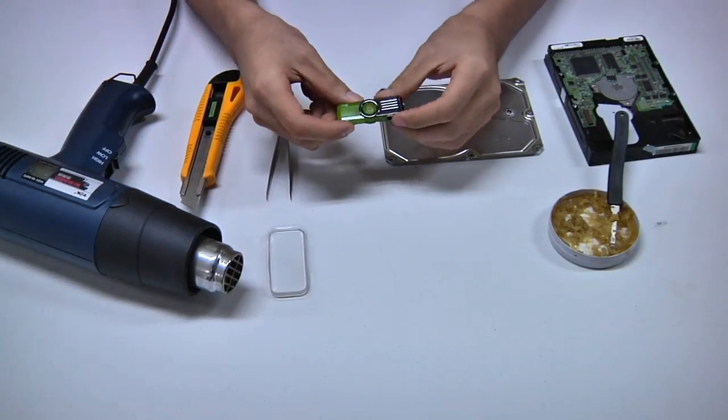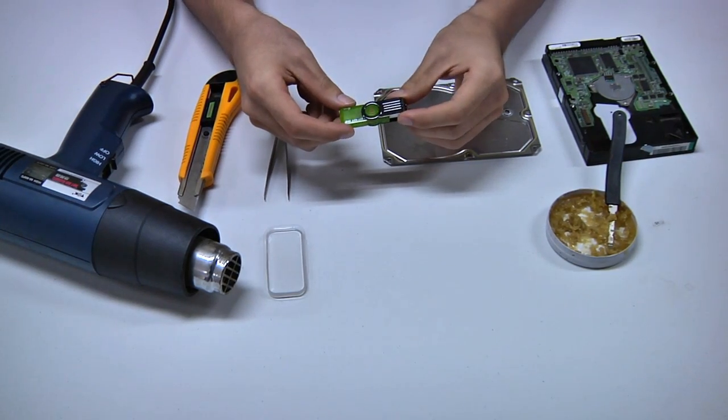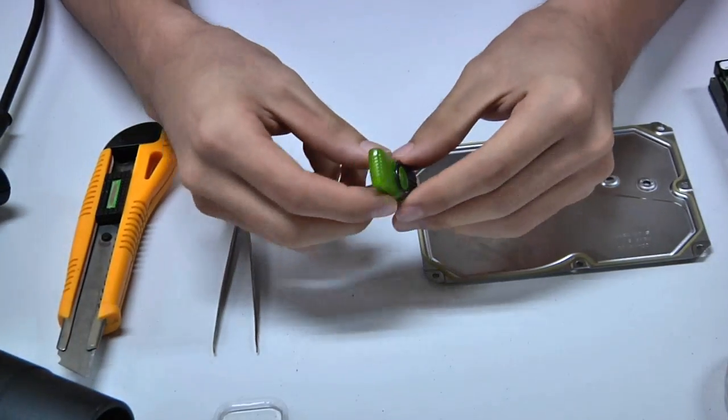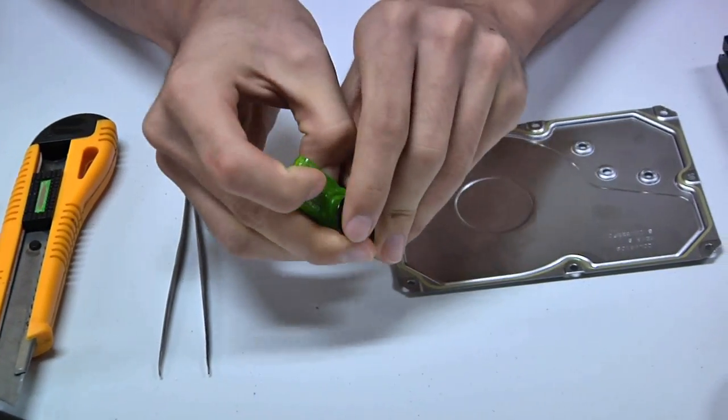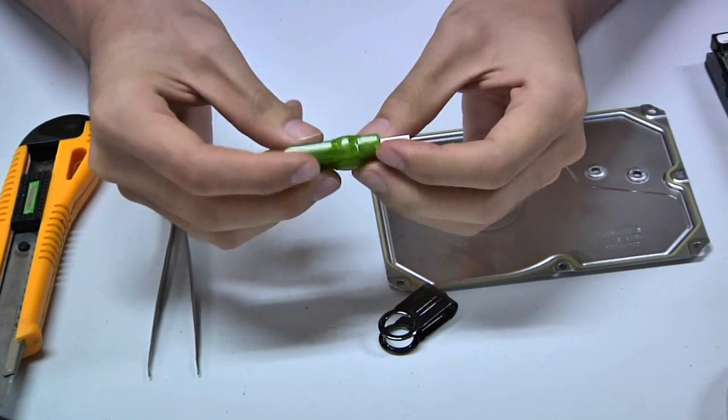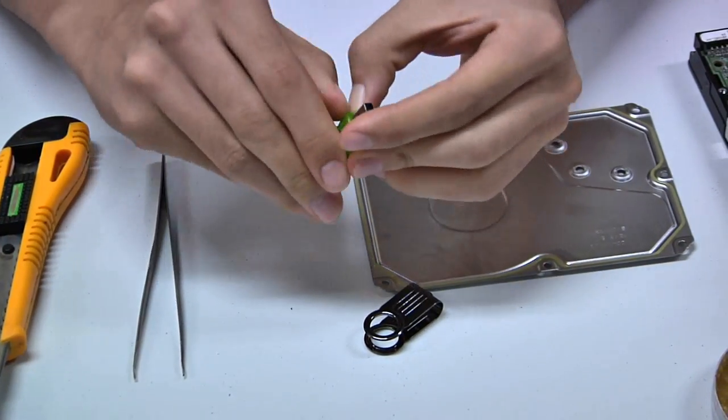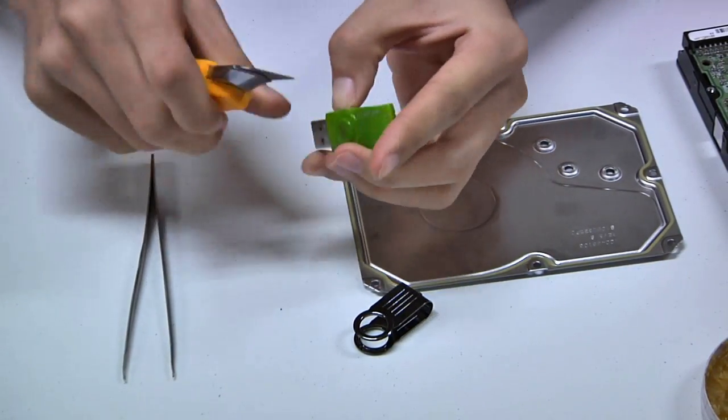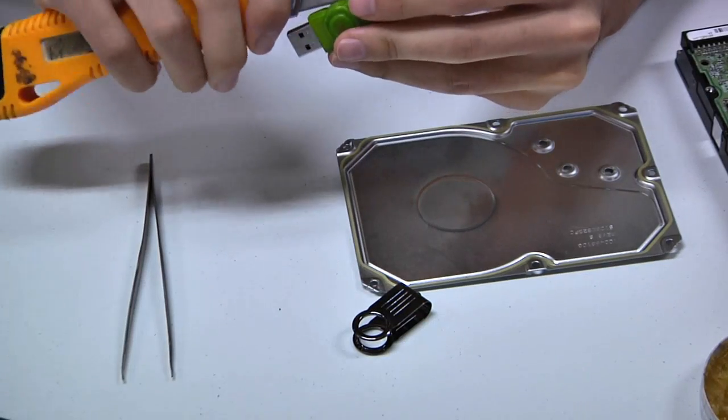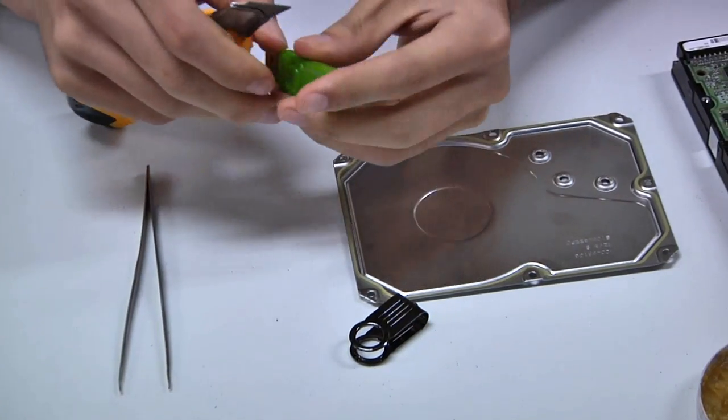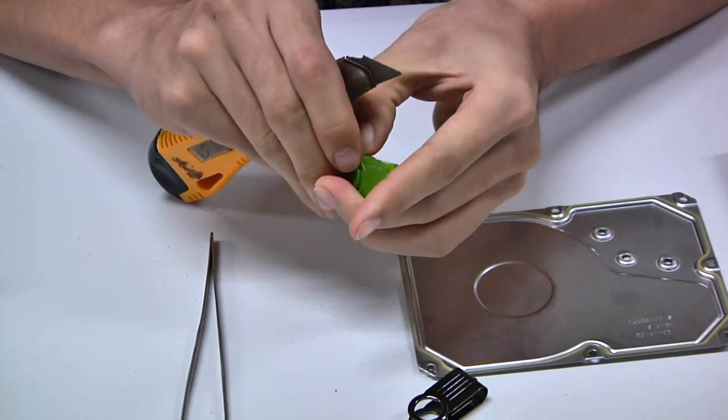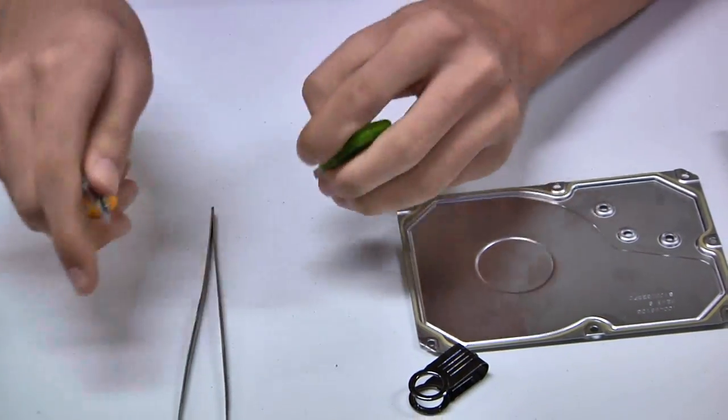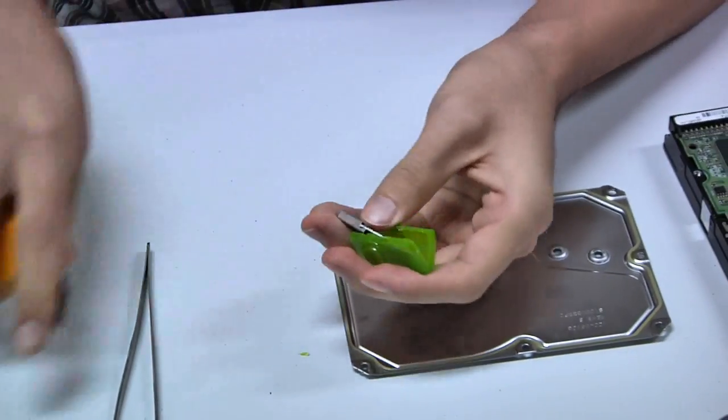Okay, so now the first step of course is we're going to dismantle the flash chip case first. We're very skillful. Actually it's very easy to do this. Now you can see the chip.